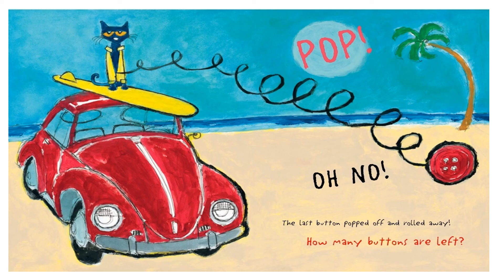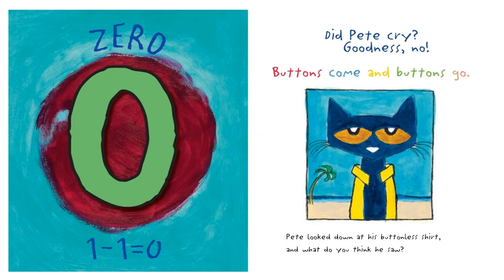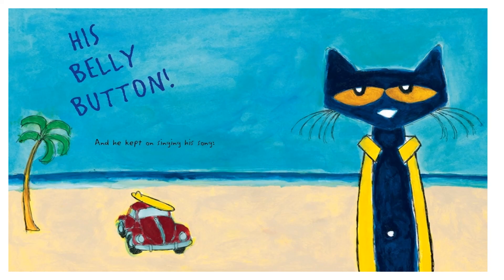Pop! Oh no! The last button popped off and rolled away. How many buttons are left? Zero. He had one and one popped off, so there are no buttons left. One minus one equals zero. Did Pete cry? Goodness, no! Buttons come and buttons go. Pete looked down at his buttonless shirt. And what do you think he saw?